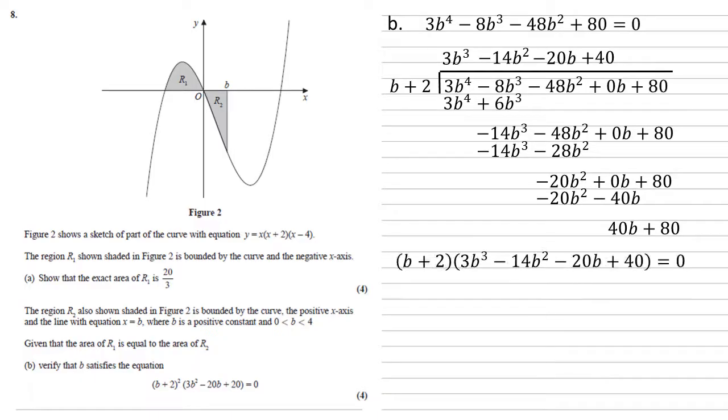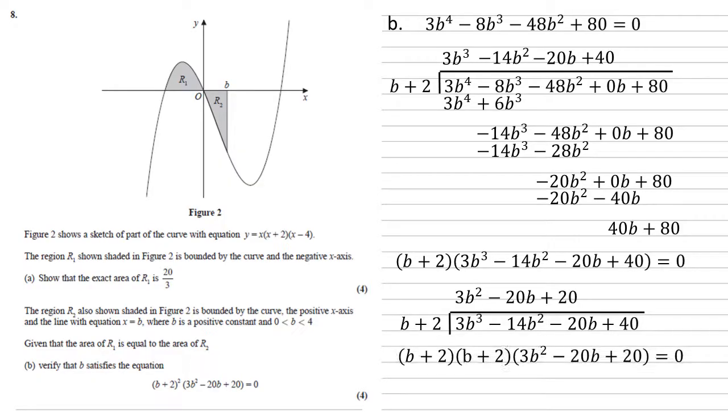So it's divided perfectly. So we've now got that our initial expression equals b plus 2 times 3b cubed minus 14b squared minus 20b plus 40. But we want b plus 2 squared at the beginning. So we're going to have to divide that right hand bracket by b plus 2 again. So going through all the long division, we end up with 3b squared minus 20b plus 20, which is what we required. So we've just shown that b plus 2 times b plus 2 times 3b squared minus 20b plus 20 equals 0, which simplifies to the form that we need.